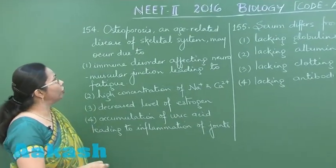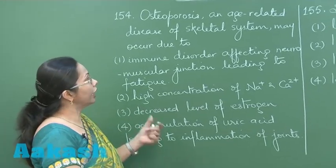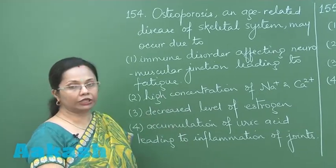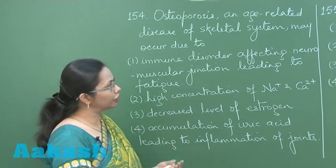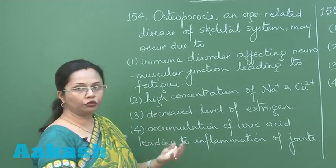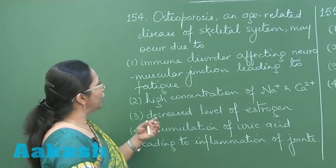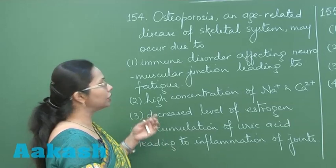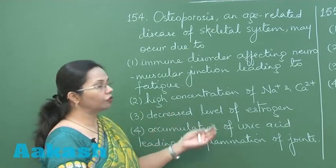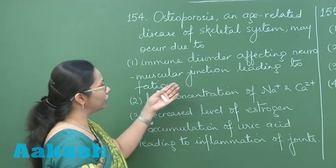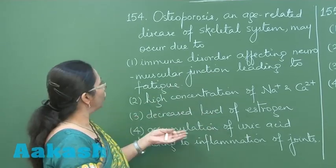Question 154: Osteoporosis is an age-related disease of the skeletal system where there is loss of calcium from the bones, which is why the bones become fragile and get easily fractured. This condition arises in postmenopausal women because of the lack of estrogen, so we do have one option here: decreased level of estrogen.